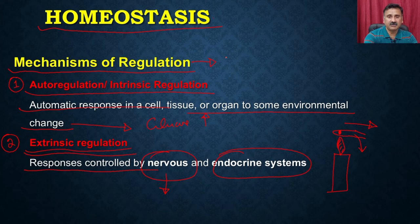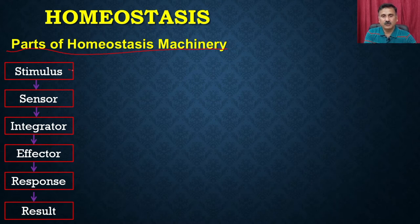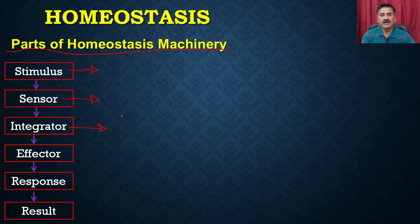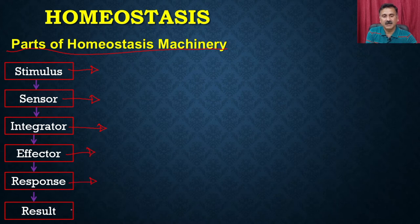To successfully maintain homeostasis, the cell or the body has a very systematic machinery. The components present in the homeostatic machinery are: a stimulus, sensors, integrators, effectors, then a response, and ultimately a result. The result decides whether to change the conditions or activate which machinery. Homeostasis is not a single process; it is multiple processes that function to maintain the home-like environment, requiring a well-defined homeostasis machinery.